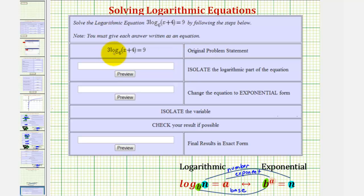So for the first step, to isolate log base six of the quantity x plus four, we need to divide both sides by three. If we divide both sides by three, this gives us the equation log base six of the quantity x plus four equals three, which is what we enter in this first cell when it says isolate the log term.